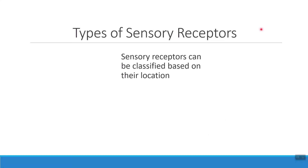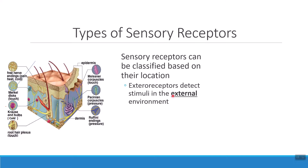For us to be able to detect sensory information, we need to use specific receptors. There are multiple different ways to classify these receptors. Let's go through them one by one. The first way that I can classify a receptor is based on where it's collecting information from — so based on its location. The first kind of receptors based on location are external receptors, called exteroceptors — they're detecting information from outside of the body, the external environment.